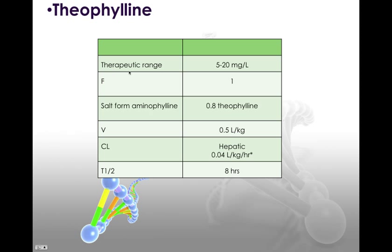Theophylline has a fairly narrow therapeutic range between 5 and 20 milligrams per liter. Some people say it's actually more like 5 to 10, but some people do respond at 10 to 20 and don't have any side effects. Toxic side effects you see with theophylline — theophylline is in the same family as caffeine. If you've had too much caffeine, your heart races, so you have cardiovascular excitation. Taking that further, your heart rate increases, and eventually you can have arrhythmias.